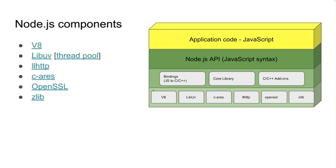JavaScript is actually an interpreted language, but when it comes to Node.js, it's not actually interpreted — it's a compiled language. I will show and prove it to you. This code is semi-compiled. V8 engine parses the JavaScript.